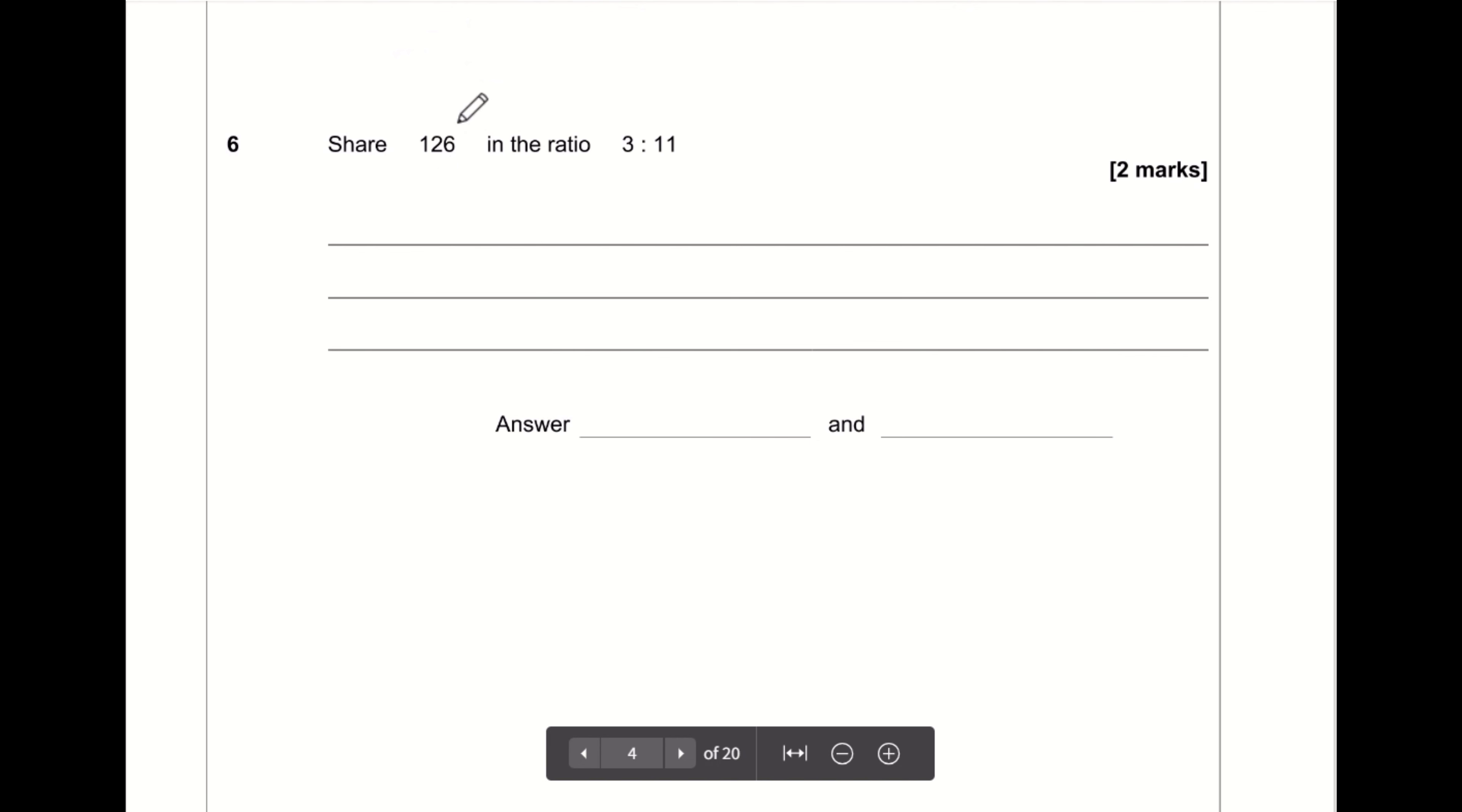Question number six, we're sharing 126 in the ratio of three to 11. Now, three plus 11 is 14. So what we want is three fourteenths and 11 fourteenths of 126. So three fourteenths of 126: if we're working out a fraction of an amount, we take our total, divide by the number on the bottom, then multiply by the number on the top. 126 divided by 14 times three is 27. And for the 11 fourteenths, it's 126 divided by 14 multiplied by 11, which is 99. And just as a final check, 99 plus 27 is 126. So we know we've definitely got it right.